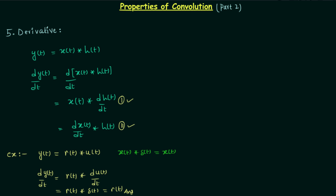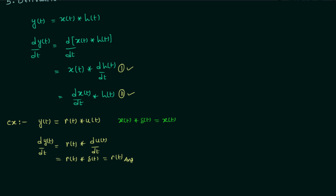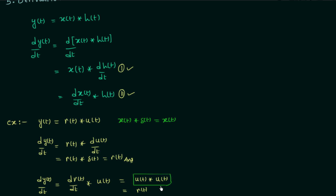Now we will solve the same problem using method 2, where we differentiate the input and then convolve it with the impulse response. So dy(t)/dt is equal to differentiation of the unit ramp signal, then convolution with the unit step signal. Differentiating the ramp signal one time gives us the unit step signal. So we have convolution of unit step signal with unit step signal, and this gives us the ramp signal. Using method 2 we obtain the same answer — the ramp signal.